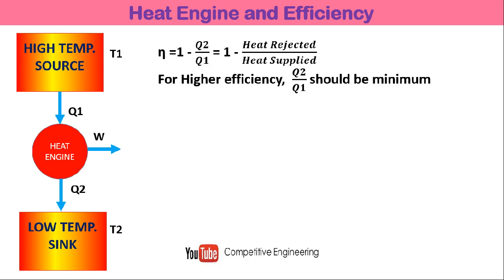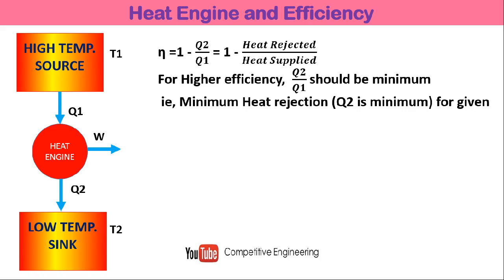For higher efficiency, Q2 by Q1 should be minimum. Higher efficiency means efficiency should be closer to 1 or 100 percent. So Q2 by Q1 — that is heat rejected divided by heat supplied — should be very small, meaning minimum heat rejection. Q2 should be minimum for a given heat supply Q1.